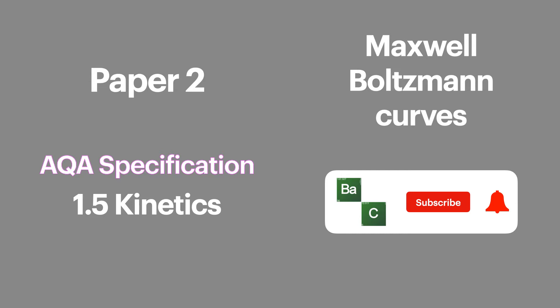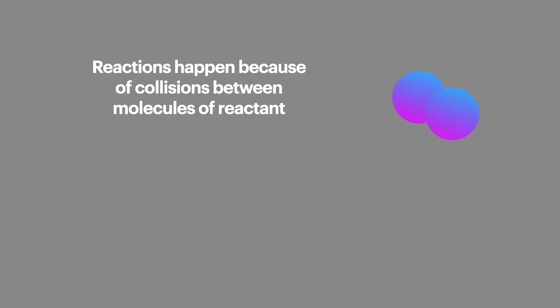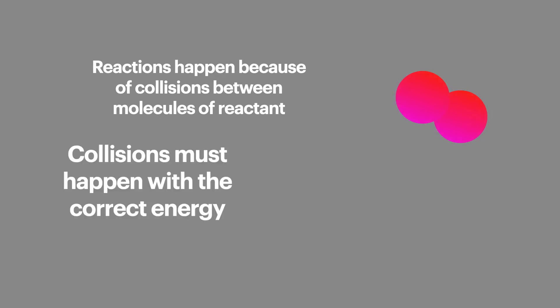A quick recap then of what we've already talked about in the last episode. Reactions happen because molecules of reactants collide. Collisions must happen with the correct amount of energy for two molecules to react and to form a new product molecule. We call this energy activation energy.